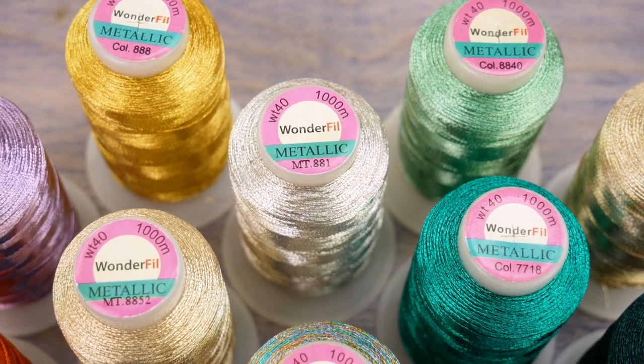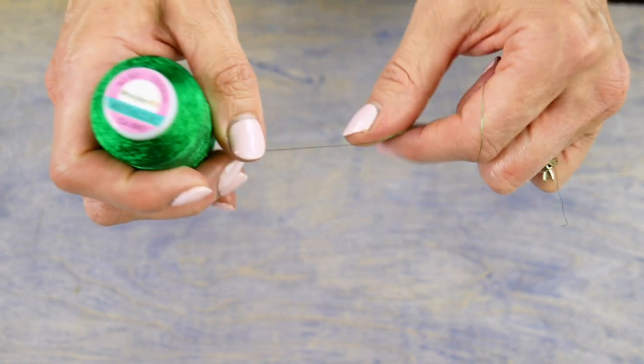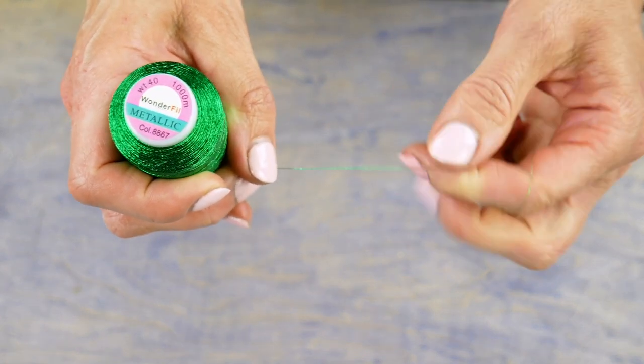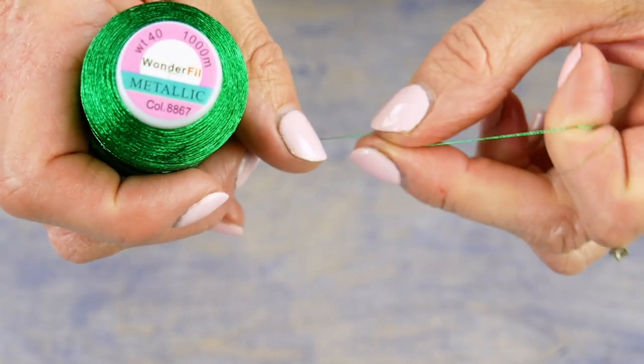Since rayon has no stretch, the core won't stretch as a polyester or nylon core might. That stretching can cause the metallic wrap to separate, which causes the shredding and breaking that sometimes happens with metallic threads.